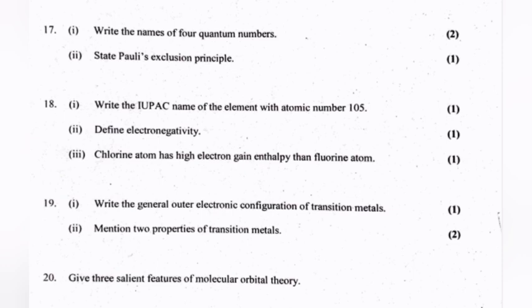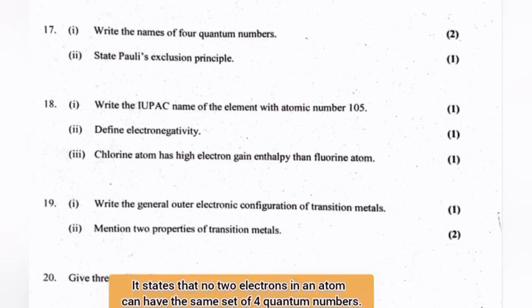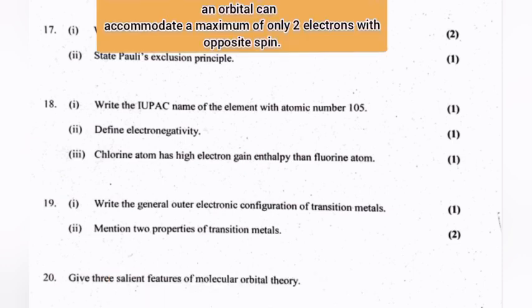State Pauli's exclusion principle. It states that no two electrons in an atom can have the same set of four quantum numbers. Or, an orbital can accommodate a maximum of only two electrons with opposite spin.